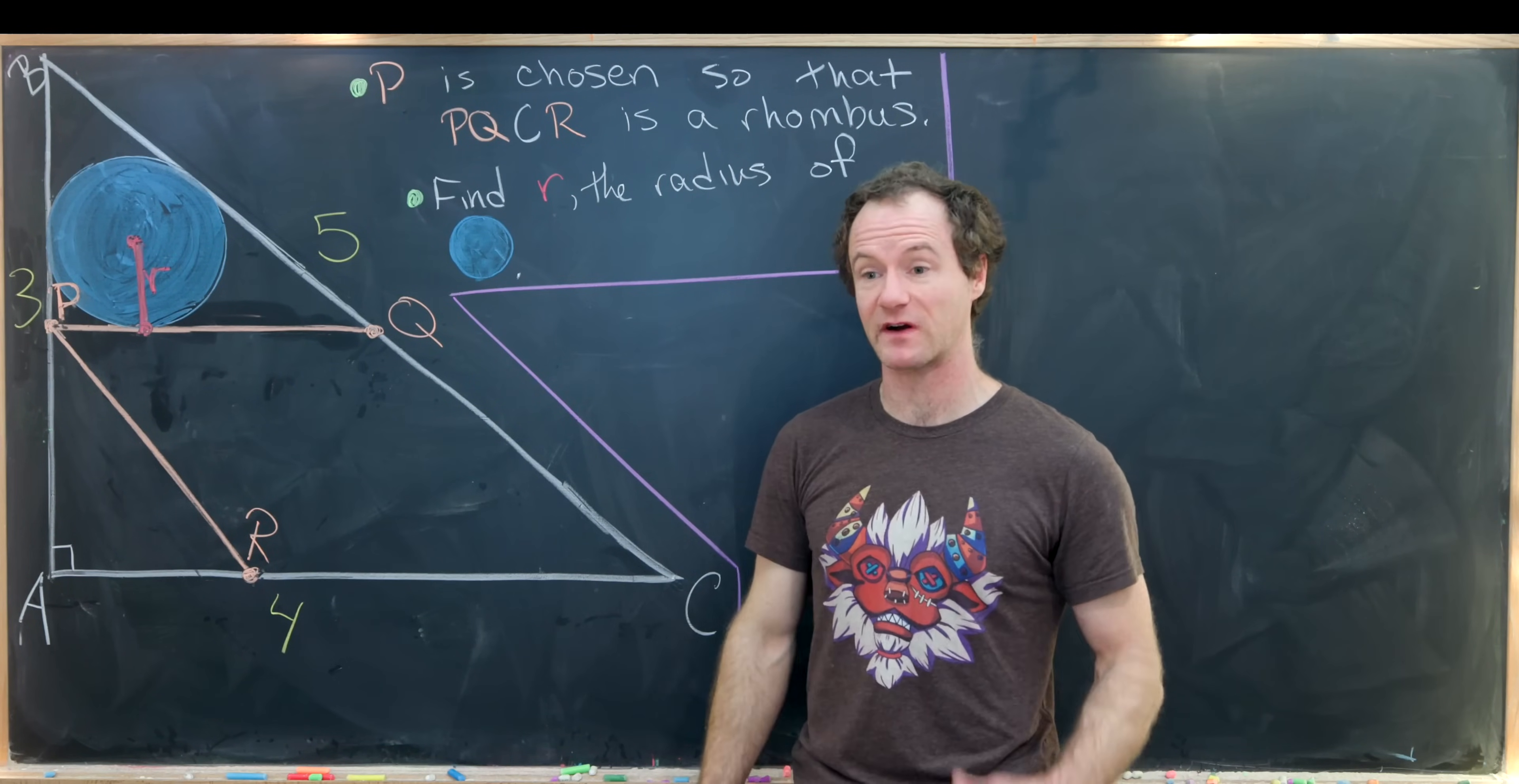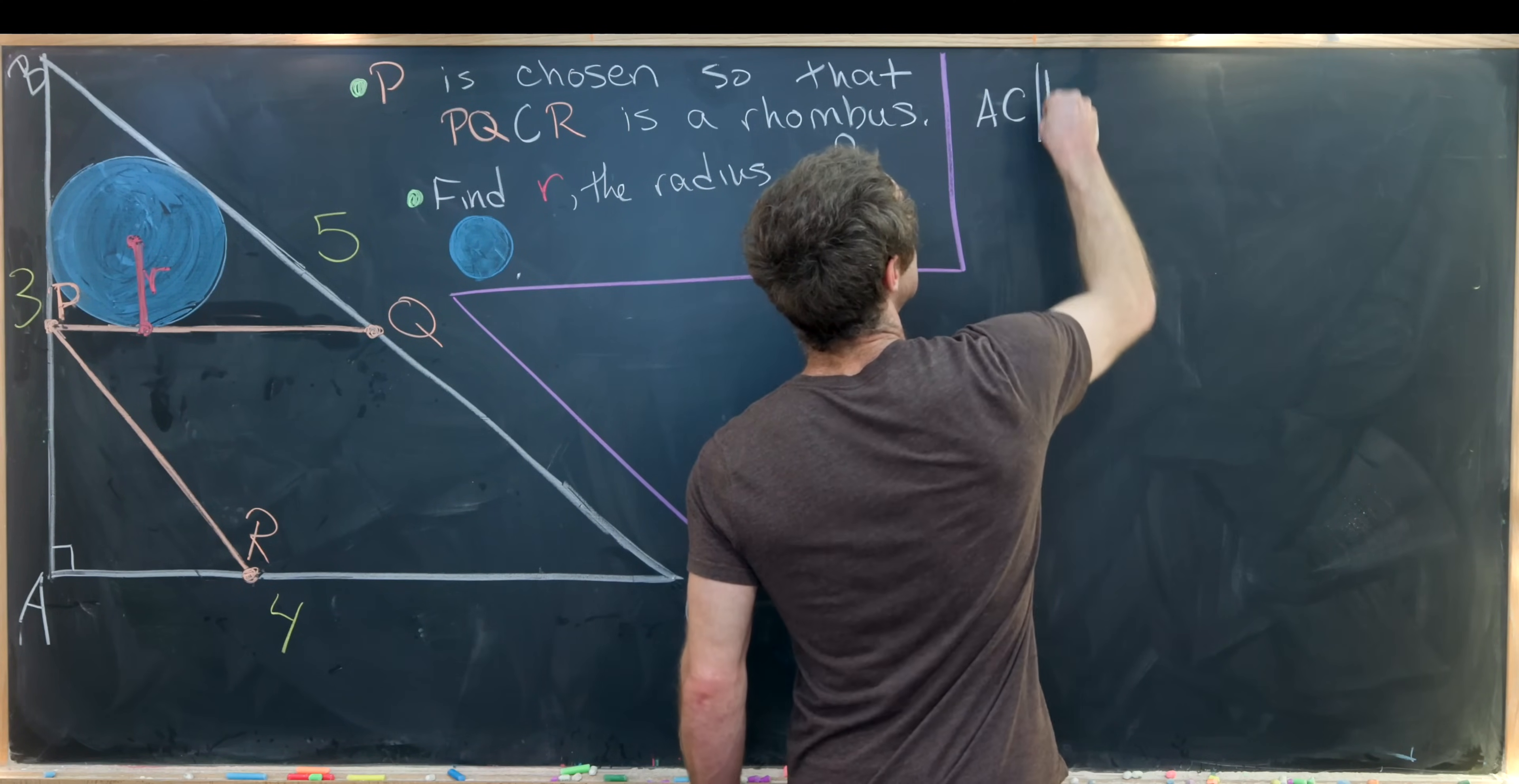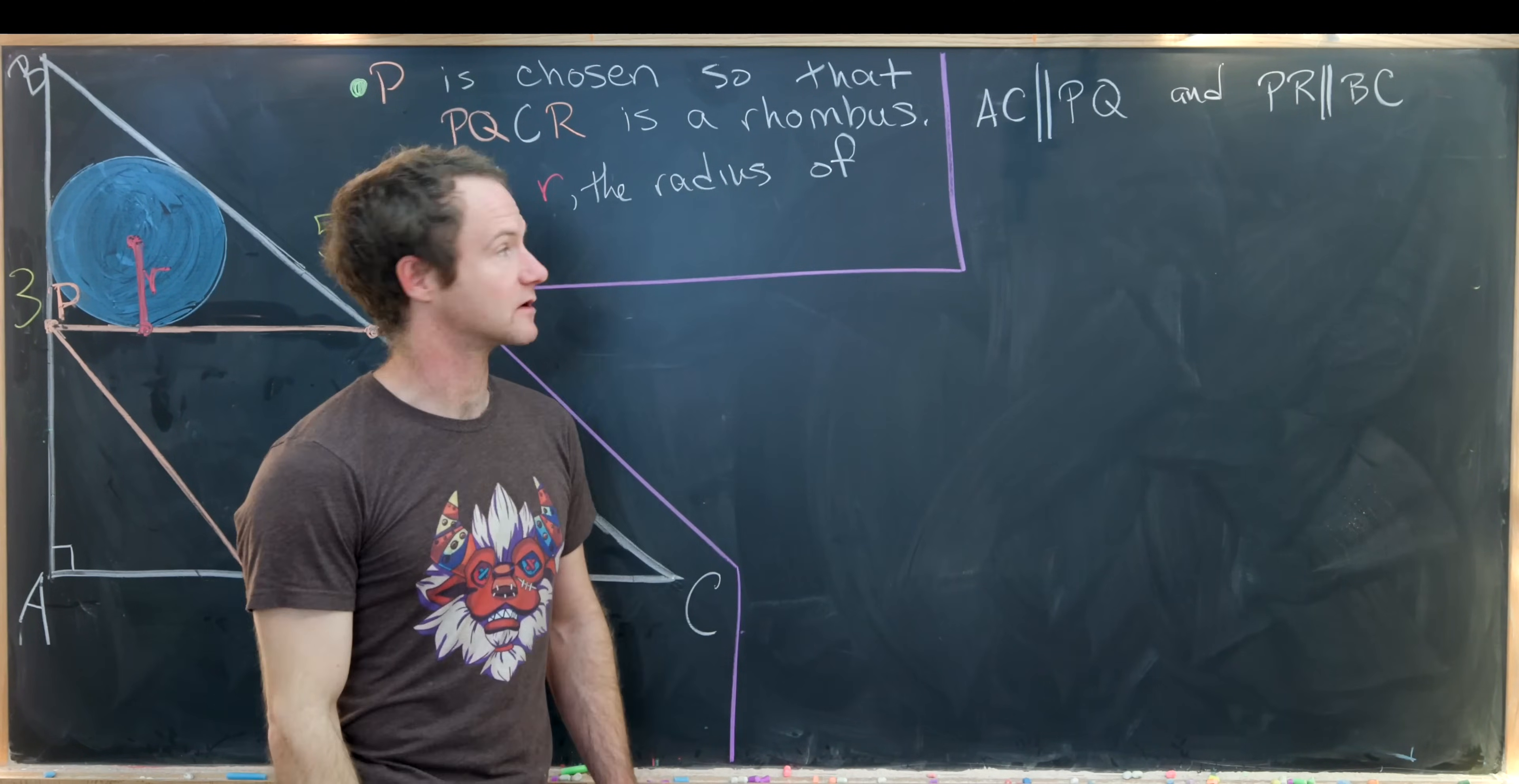Let's collect some of our facts and then we'll get to the argument. Since this is a rhombus, we know the opposite sides are parallel. So in particular, we know side AC is parallel to PQ and we know side PR is parallel to BC. That's because every rhombus is a parallelogram.